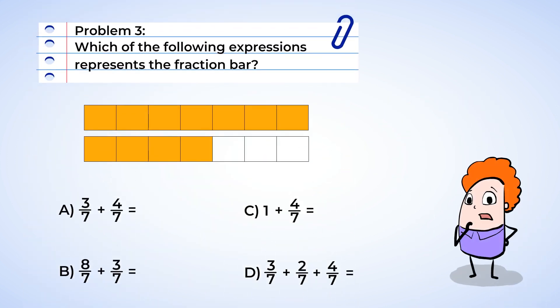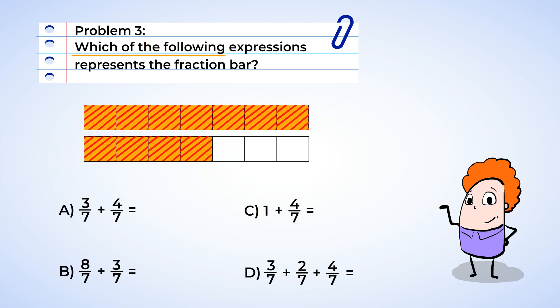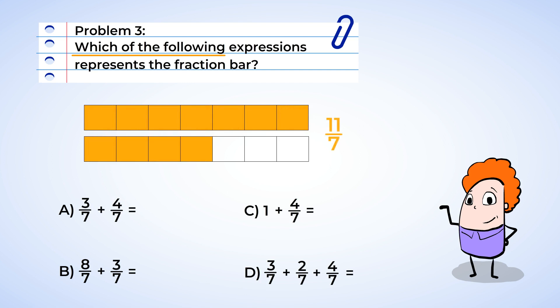Last problem already? I was just getting warmed up. Which of the following expressions represents the fraction bar? It looks like there are two rectangle fraction bars, and each of the bars are split into seven parts, and eleven parts are shaded in total. This means the fraction represented is eleven-sevenths, and we can also look at it as a mixed number. There is one whole and four out of seven shaded, so this can also be called one and four-sevenths. Now that we know what the fraction is, we can look at the expressions.